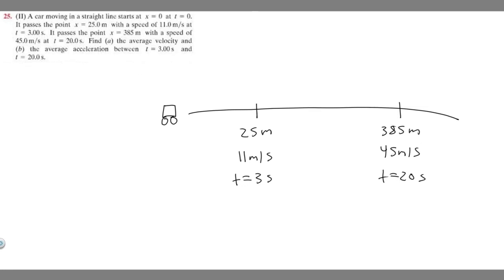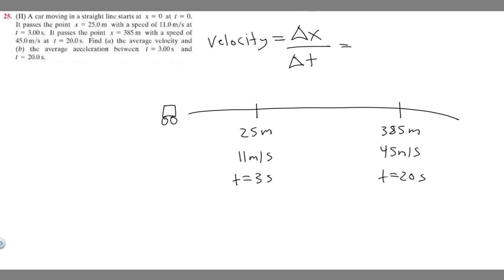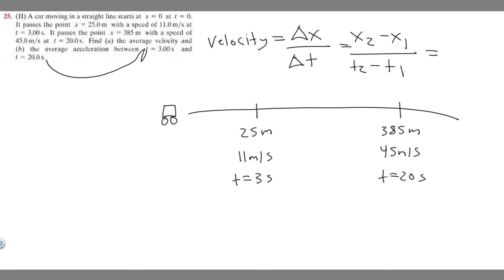So this is our diagram set up. We're trying to find average velocity and average acceleration over this interval. Let's start with velocity. Velocity is change in position — I'll represent that as delta x over change in time — which basically just means our final position x sub 2 minus our starting position x sub 1, over final time t sub 2 minus our starting time. Our interval is between 3 and 20 seconds, so our final time is 20 seconds and our starting time is 3 seconds, giving us 20 minus 3.